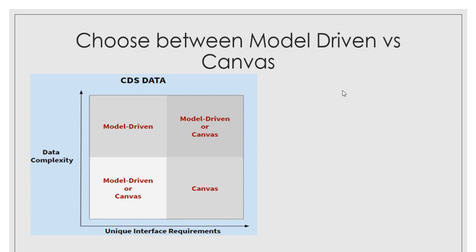So how to make a decision on which one to choose? The simple rule is to compare data complexity versus UI requirements. If you are working with a lot of transitional data and referential data, then the obvious choice is to go for model-driven apps. When UX is an important factor and you want a very good intuitive UI, then possibly choose canvas apps, because model-driven does come with forms you can customize but it lacks a bit of that intuitive look.